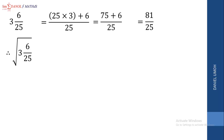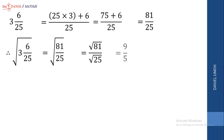Therefore, we are looking for the square root of 3 whole number 6 over 25, which gives us the square root of 81 over 25. Applying our rule, we have the square root of 81 all over the square root of 25. The square root of 81 is 9, because 9 times 9 is 81. The square root of 25 is 5, because 5 times 5 is 25. So we get 9 over 5. Converting back to a mixed fraction: 9 divided by 5 gives 1 whole number 4 over 5.